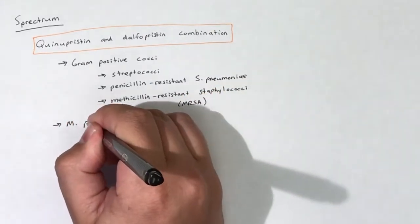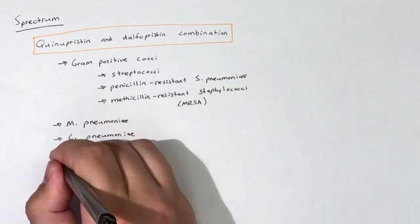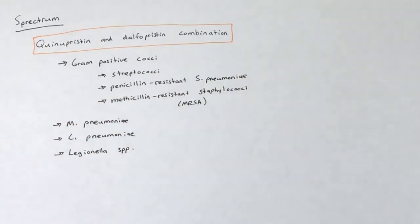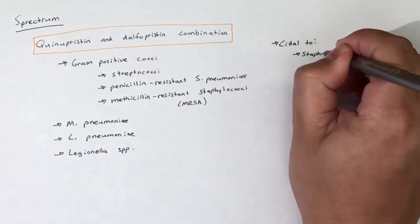In addition, Quinupristin/Dalfopristin is active against M. pneumoniae, C. pneumoniae, and Legionella species.